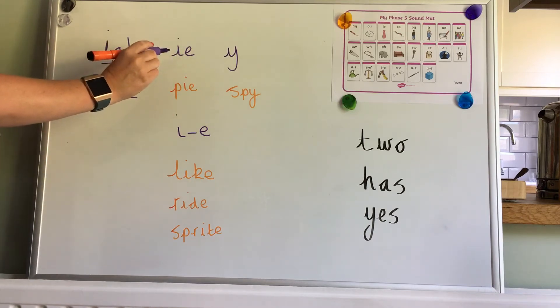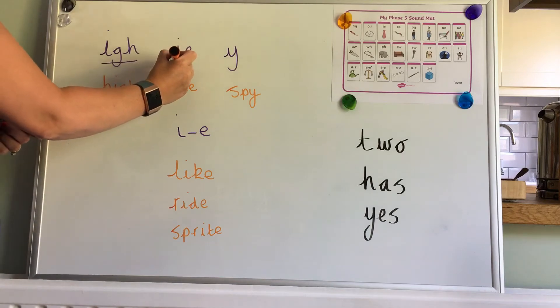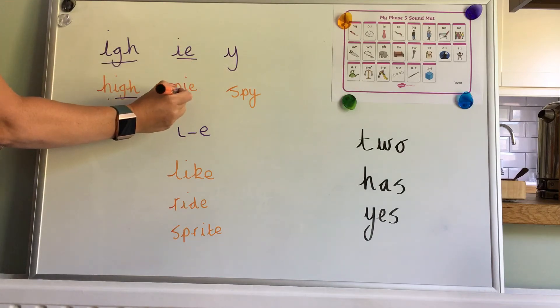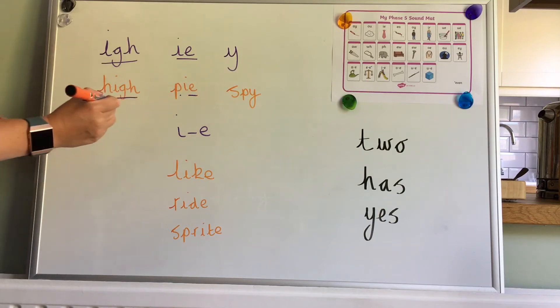We then looked at a phase 5 spelling, digraph I-E, and it came in words like this: P-I-E, pie.